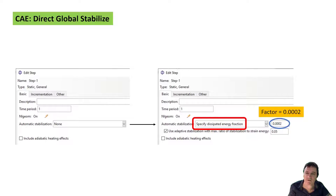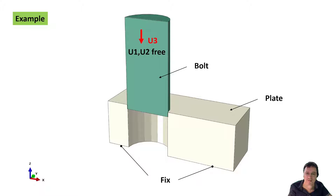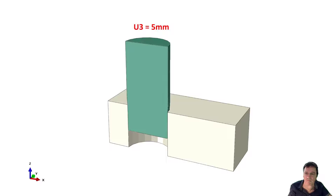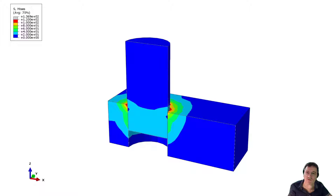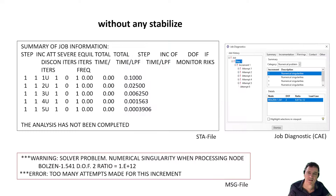An example with a bolt and a plate shows the use of global stabilization. The plate is fixed at the bottom and the bolt is pressed into the slightly smaller hole. The two other directions are free so that we expect numerical singularity. The bolt is pressed 5 mm into the hole. At the end, the von Mises stress goes over 120 MPa. The first calculation was made without stabilization and was cancelled without convergence.